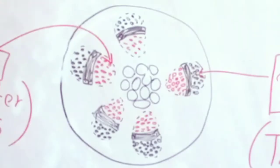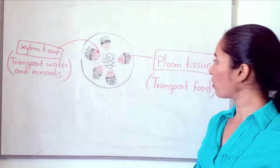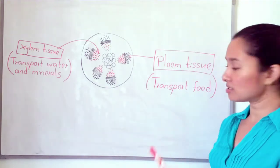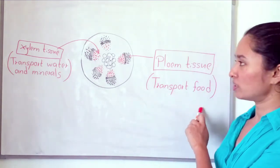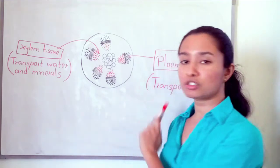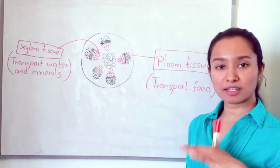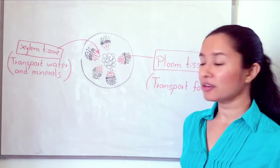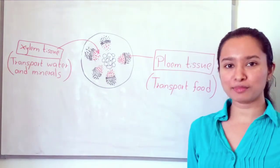Here you can see another tissue called phloem tissue. This tissue transports food through the plant. These are the two main tissues we can see in the cross-section of the balsam plant — xylem tissue and phloem tissue.